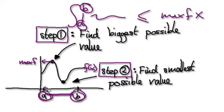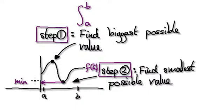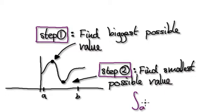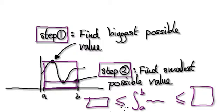Then you multiply it by the width, which is from a to b. The second step is to identify the lowest possible value that f of x can be within our range a to b. Once you've got the min of f, multiply it by this width. So basically, our integral from a to b will be trapped in between this rectangle and this rectangle. Your job is to find these two values.